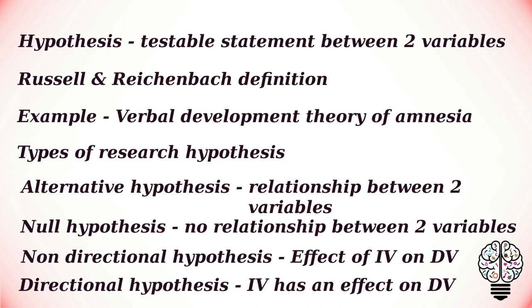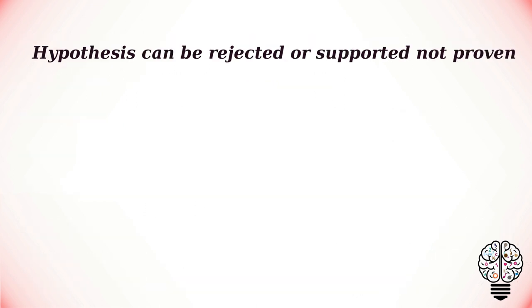A one-tailed directional hypothesis predicts the nature of the effect of the independent variable on the dependent variable. For example, adults will correctly recall more words than children.